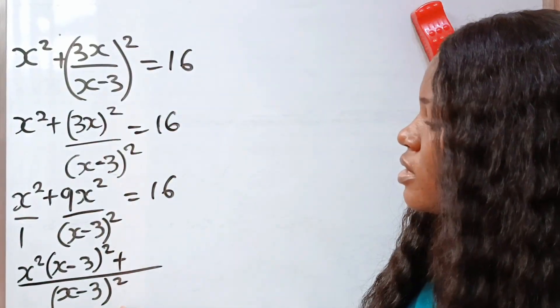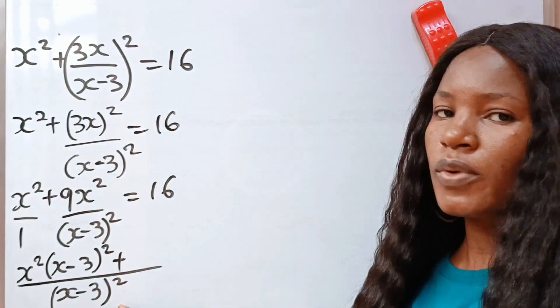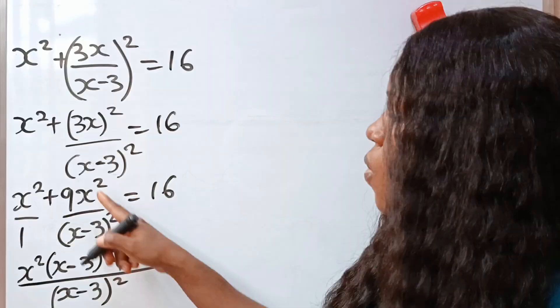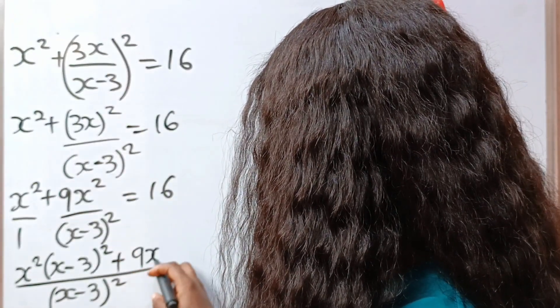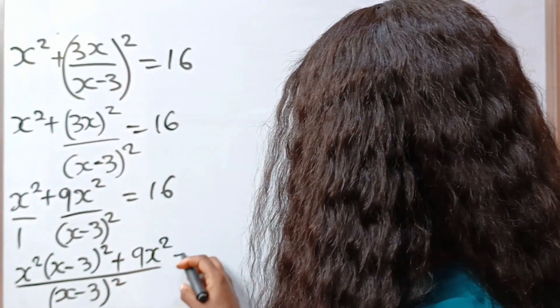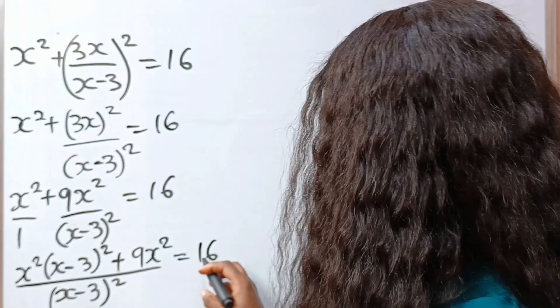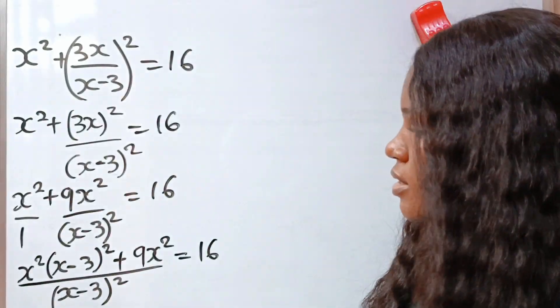Now when this is divided by this, we have 1. One times this is still the same. Is equal to 16.